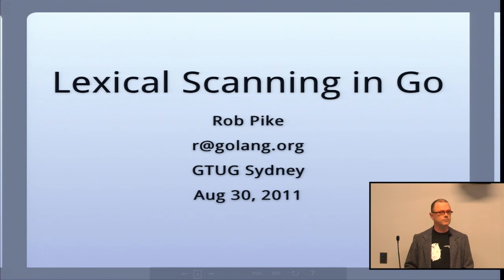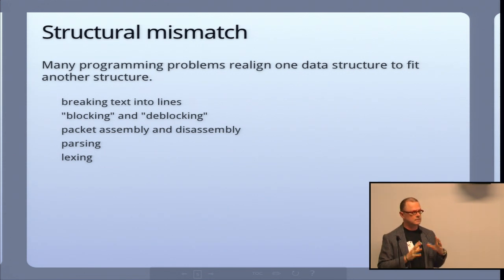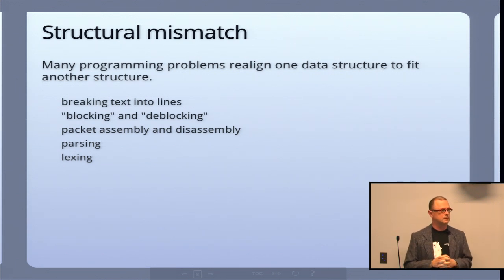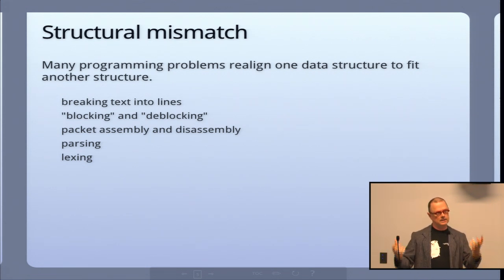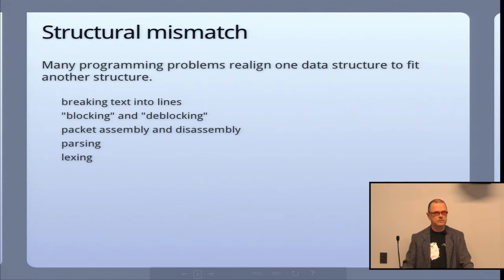How many of you are familiar with the work of Michael Jackson? Michael Jackson developed Jackson Structured Programming, which was a model for solving structural mismatch problems in computing. These come up a lot. Many programming problems deal with having data in one form and data in another form, trying to connect them up. The flow of control on both sides doesn't really work very well — blocks coming in, turning to lines, partial lines and partial blocks. Pretty much any sort of data processing problem has at least some aspect of that flavor.